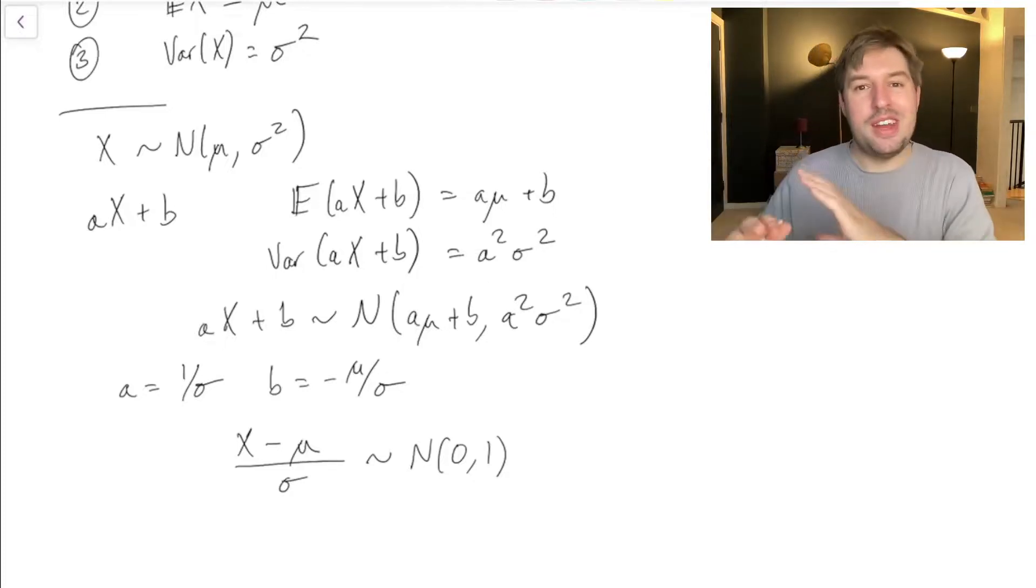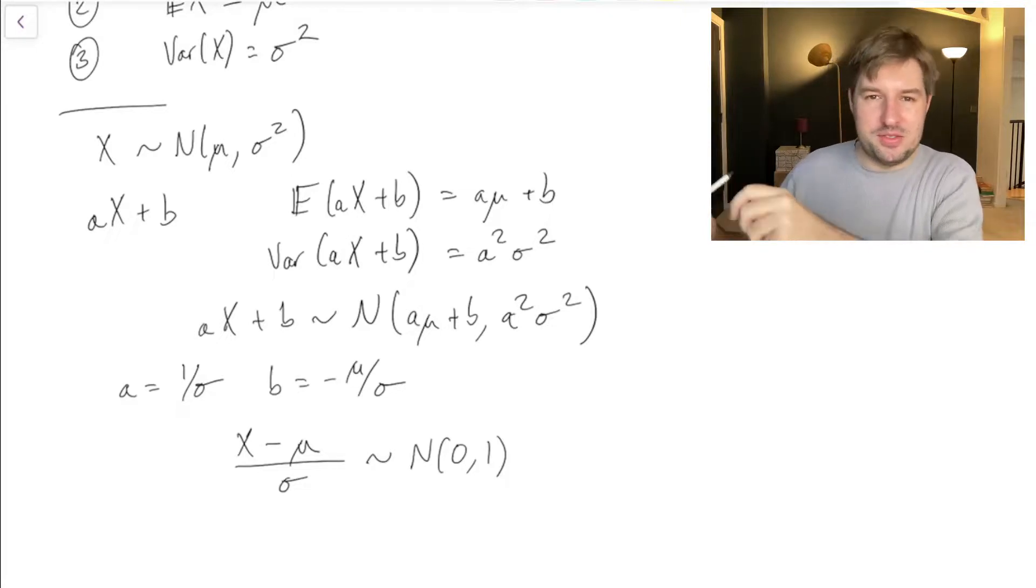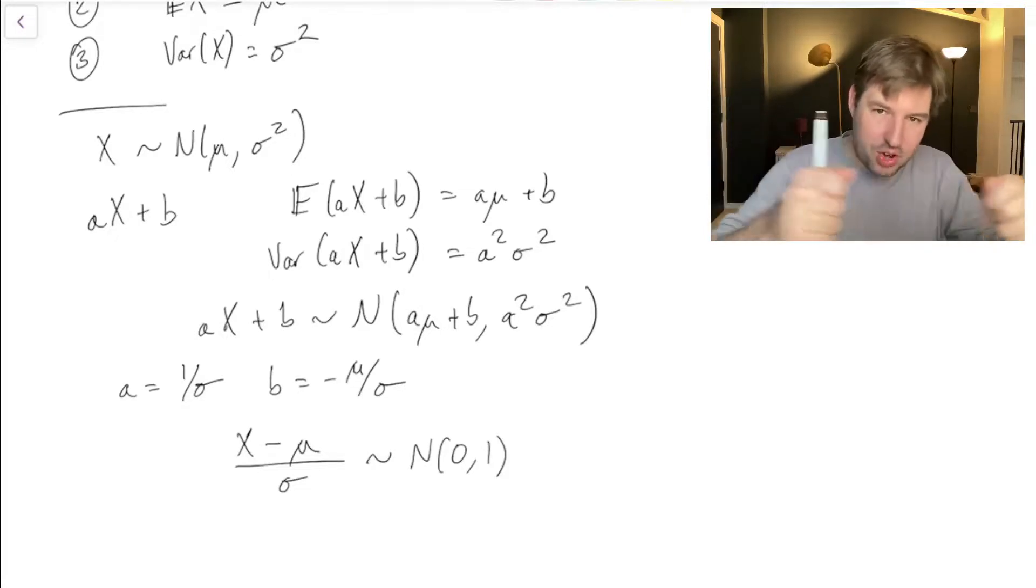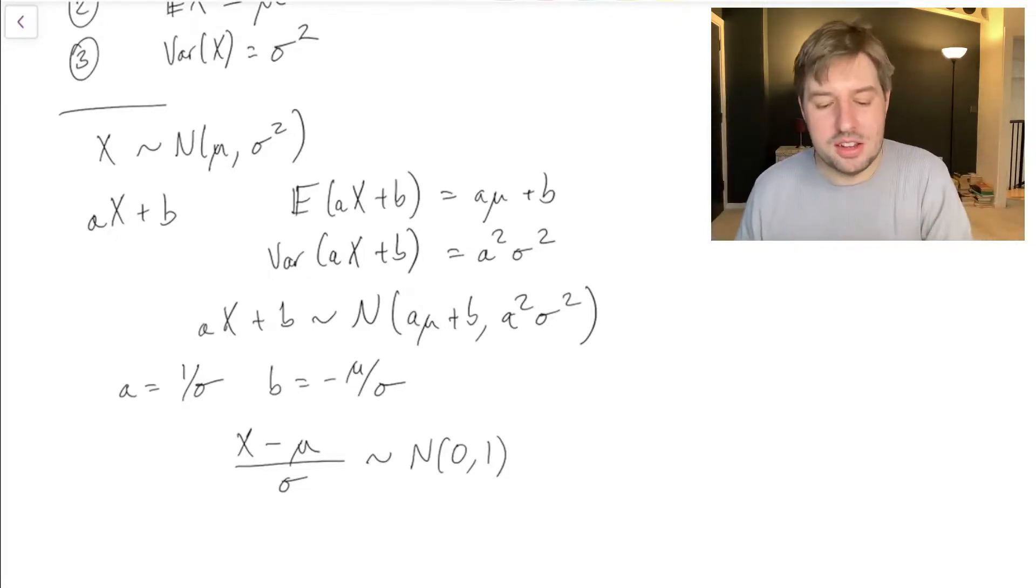So whenever we have any other normal distribution, you can kind of shift it and then stretch it to make it into a standard normal distribution. And that will be something that will be convenient later, often. And in fact, in the proof of the theorem we just mentioned, often it's convenient to turn your normal distribution into a standard one before trying to do anything with it.